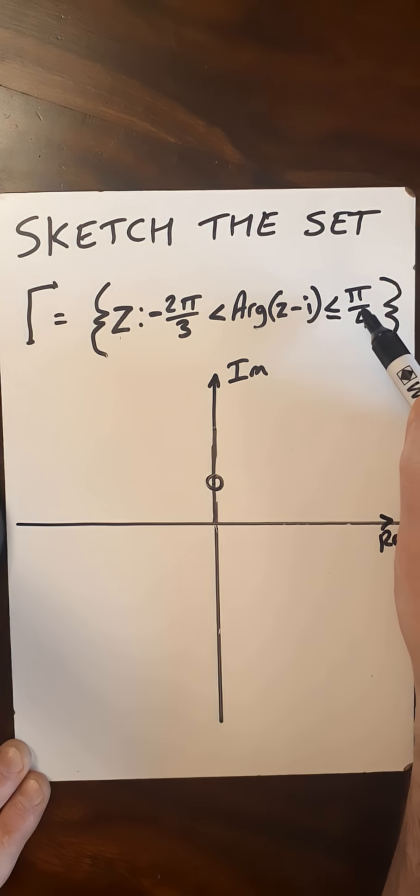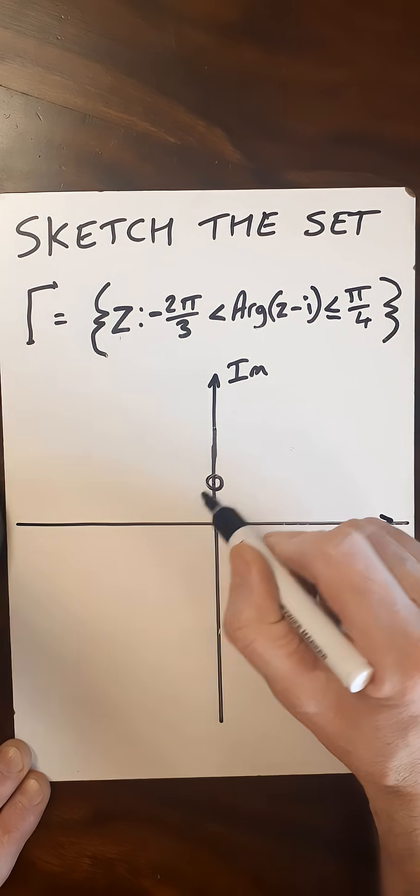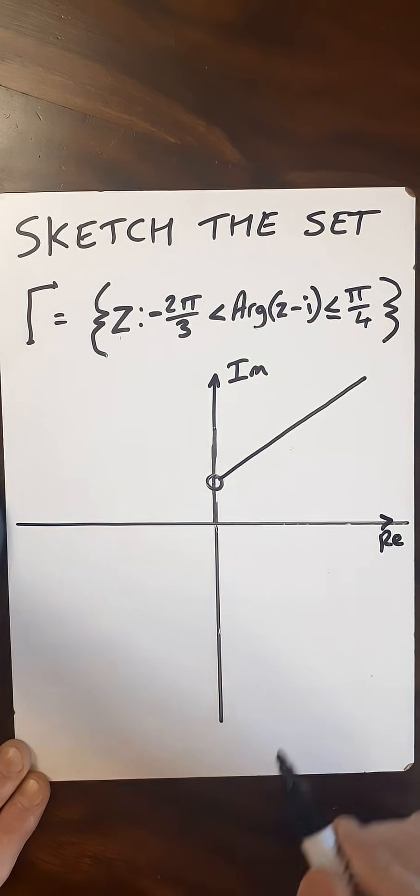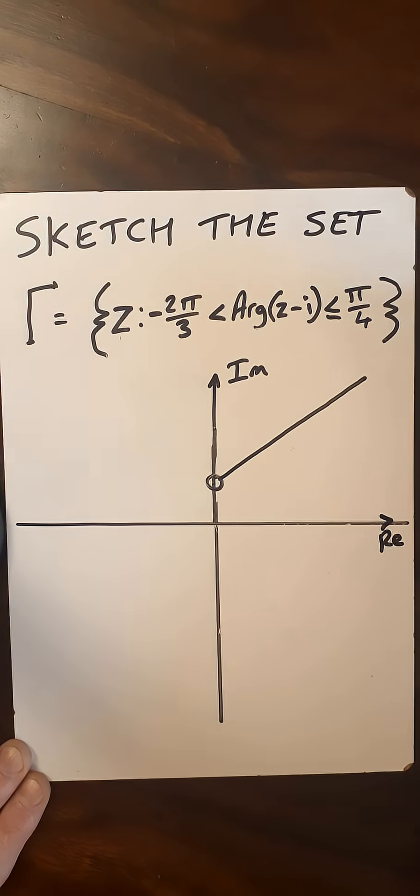So it's going to be less than or equal to pi over 4. So we can draw a solid line going in the direction of pi over 4. That will be in that direction, and it will go on forever.